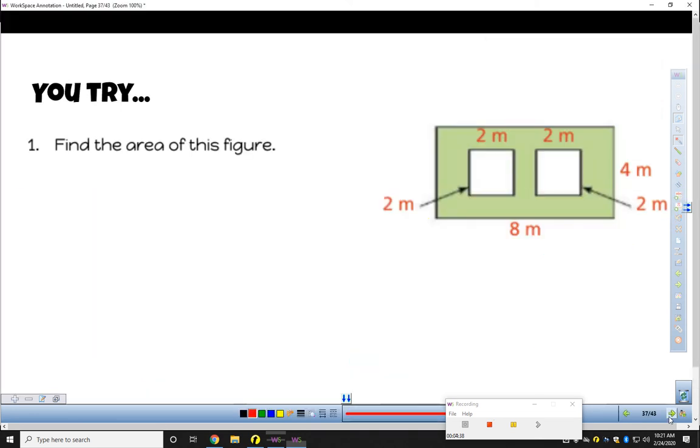See if you can figure this out for this particular one. I want to know, find the area of the green portion. These white sections have been punched out. So pause the screen and try it.